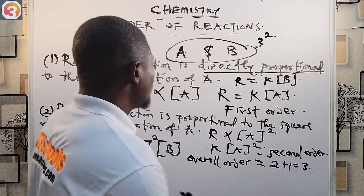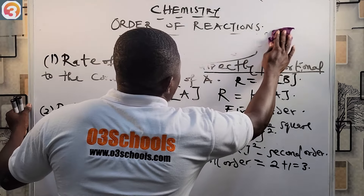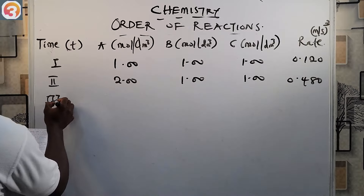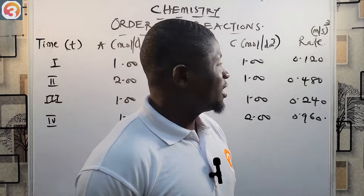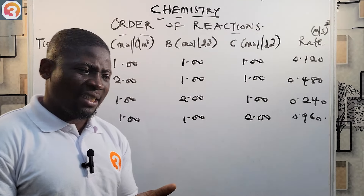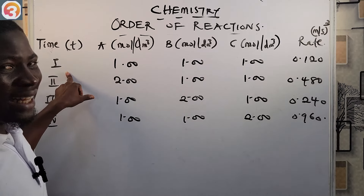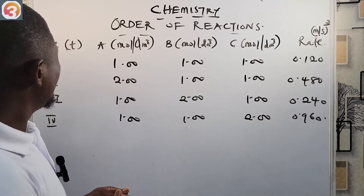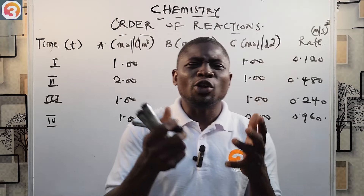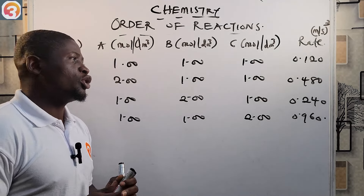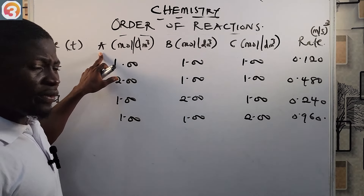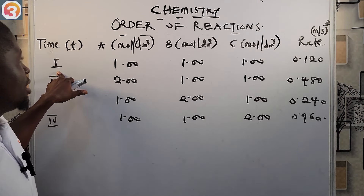We are going to see what happens to the rate as the concentration of each reactant changes, and draw up a conclusion. We will then answer questions from the Old 3 Schools Jump app. Please make sure you download and activate the app. Do not forget to like this video, subscribe to this channel, and share the videos with others.